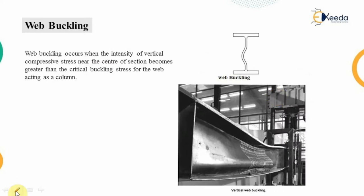Web buckling occurs when the intensity of the vertical compressive stress near the center of the section — that is, the center of the I-section web — becomes greater than the critical buckling stress for the web acting as a column.